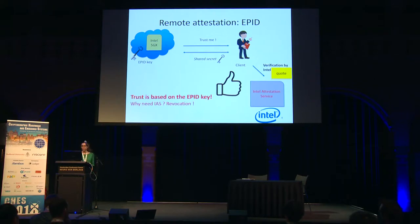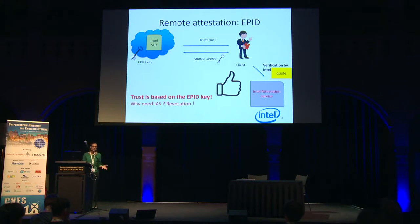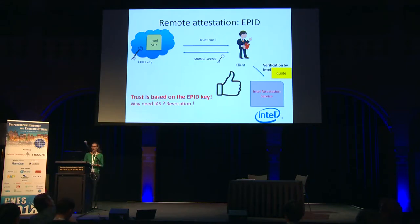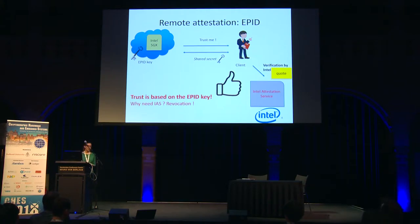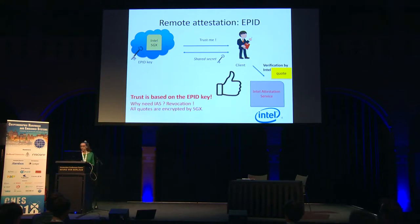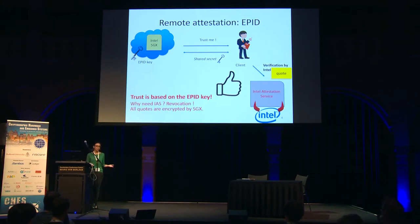There are important things to notice. The whole trust of this protocol is based on the EPID key — only genuine SGX machines have access to it and can produce the attestation quote. The client must send the quote to Intel's attestation service for revocation checking. Intel also encrypts the attestation quotes, so the client cannot verify them directly. If Intel is malicious, this creates a privacy issue, since the attestation service has access to information about which client is communicating with which enclave.